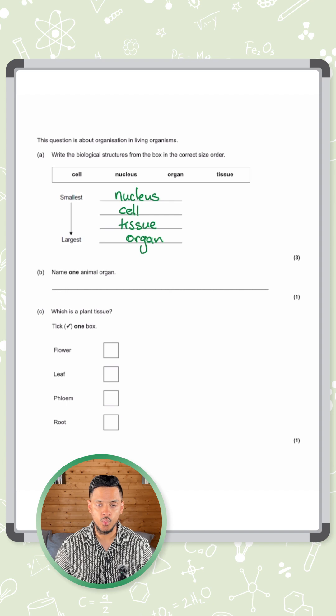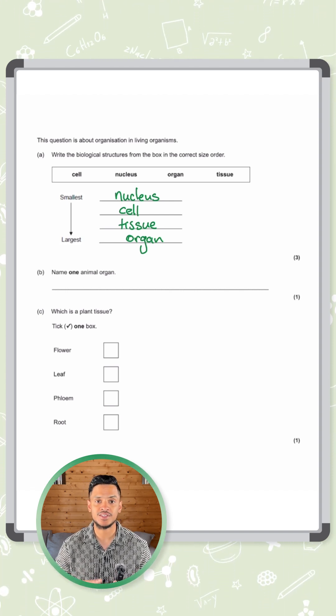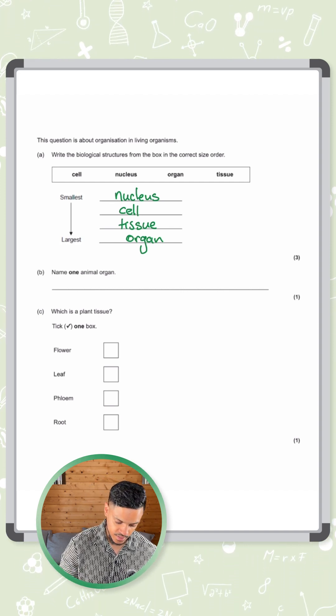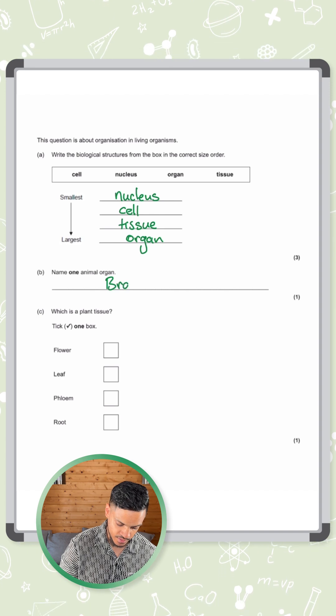Now name one animal organ. There's so many answers you could say here. You could say brain, you could say liver, you could say stomach, you could say kidneys, you could say lungs. Pick any one of those. It's fine. I'm gonna say brain for this answer.